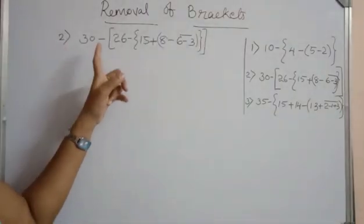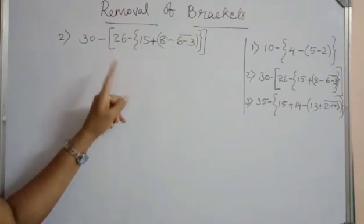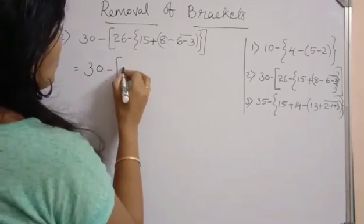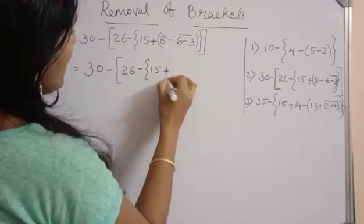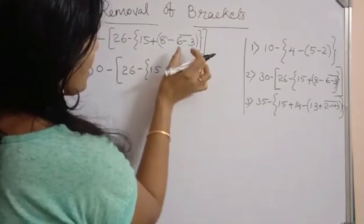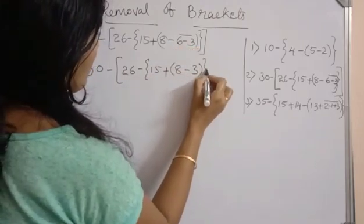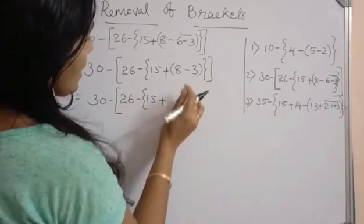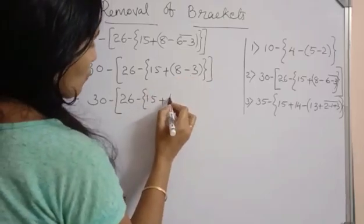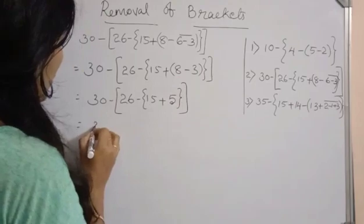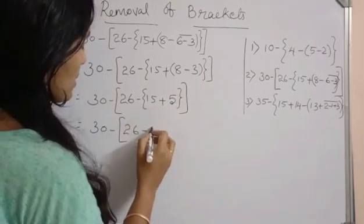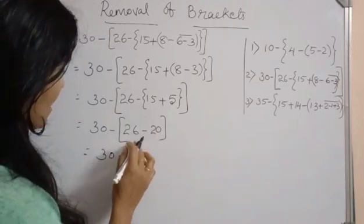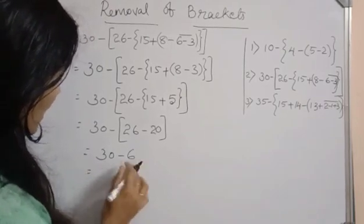Next question has all four brackets: vinculum, small bracket, curly bracket, and square bracket. As per the order, first remove the vinculum: the expression becomes 30 minus [26 minus {15 plus (8 minus (6 minus 3))}]. Six minus 3 is 3. Next, remove the small bracket: 8 minus 3 is 5. Then simplify: 26 minus (15 plus 5) = 26 minus 20 = 6. Finally, 30 minus 6 equals 24. That is the final answer.